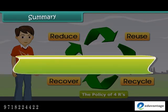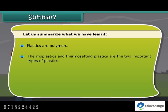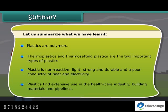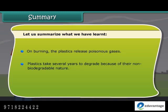Let us summarize what we have learnt. Plastics are polymers. Thermoplastics and thermosetting plastics are the two important types of plastics. Plastic is non-reactive, light, strong and durable, and a poor conductor of heat and electricity. Plastics find extensive use in the healthcare industry, building materials and pipelines. On burning, plastics release poisonous gases. Plastics take several years to degrade because of their non-biodegradable nature. Adopt the 4 R's: reduce, reuse, recycle and recover.